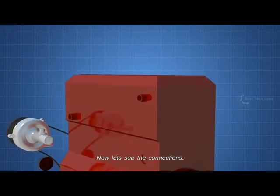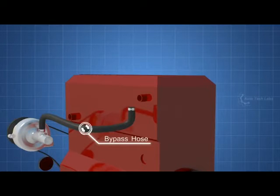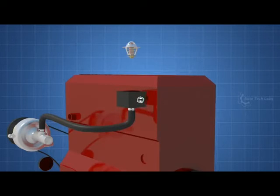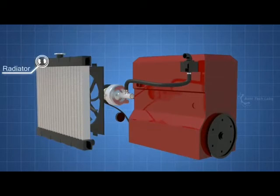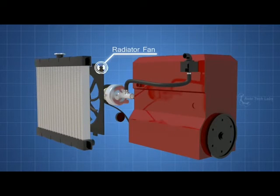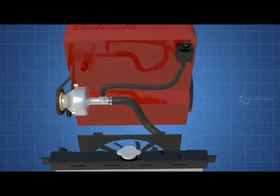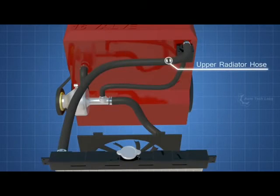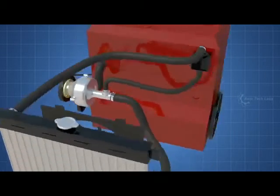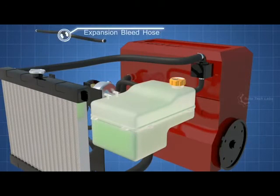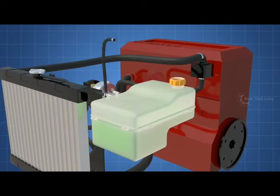Now let's see the connections. The thermostat bypass hose. The thermostat housing. Inside the thermostat. The radiator and the radiator fan. The lower radiator hose. The water pump outlet hose. The upper radiator hose. The coolant expansion tank. The expansion bleed hose. Coolant overflow hose.